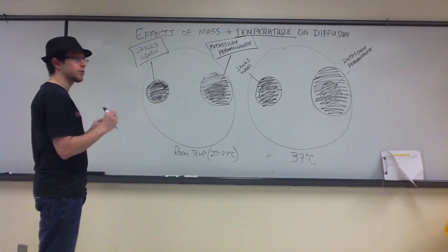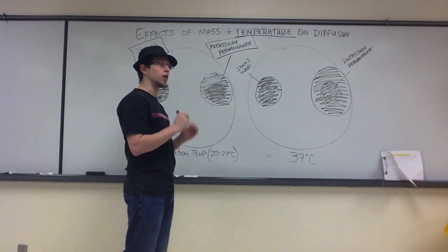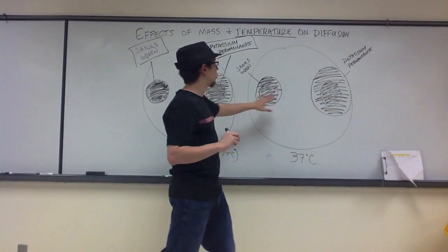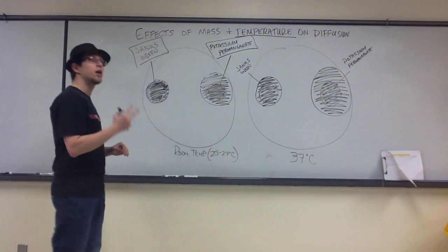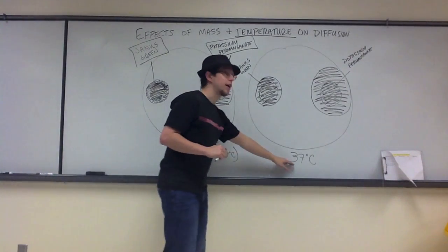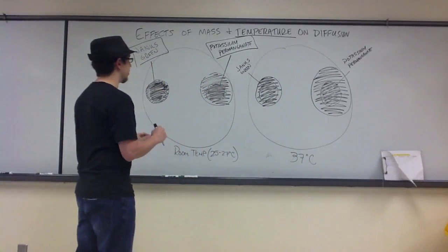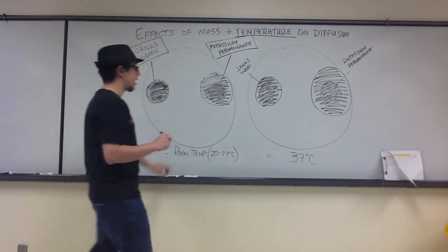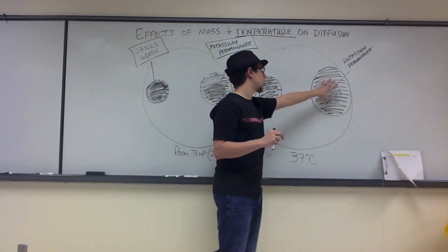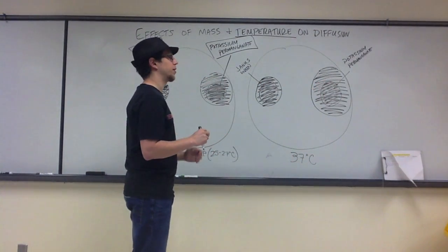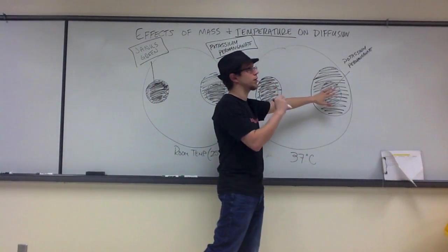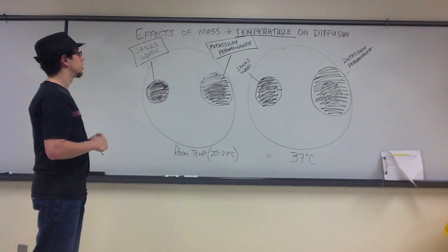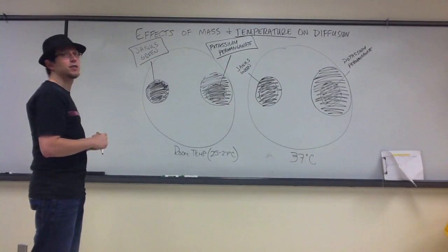What we found was: first, because potassium permanganate has a lower molecular weight than Janus Green, it diffuses through the agar faster, so on both plates there is a larger halo of potassium permanganate than of Janus Green. Second, increasing the temperature results in molecules diffusing through the agar faster — the halo of Janus Green is slightly larger on the 37-degree plate than on the room temperature plate, and the same is true for potassium permanganate, suggesting that diffusion occurred faster at higher temperature. That concludes the lecture on the effects of mass and temperature on diffusion.